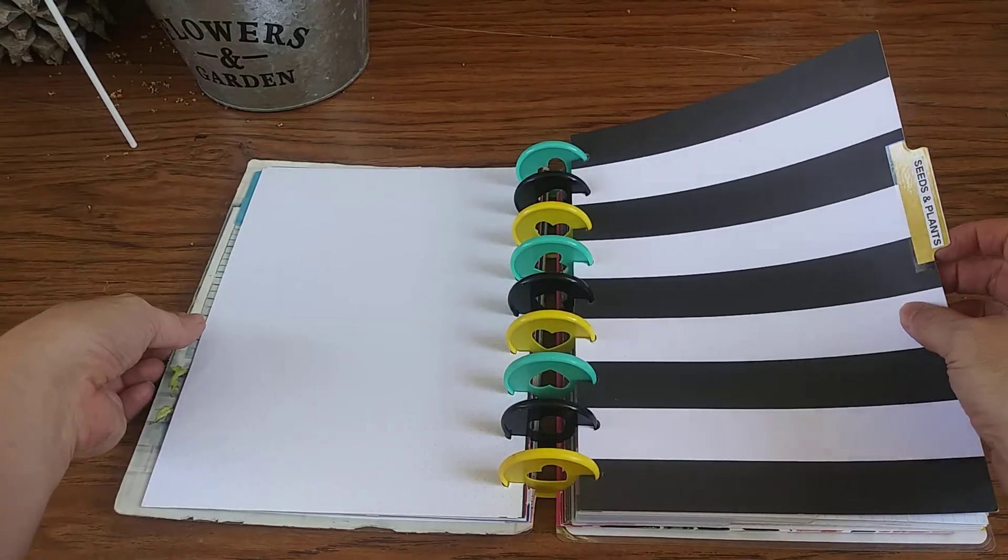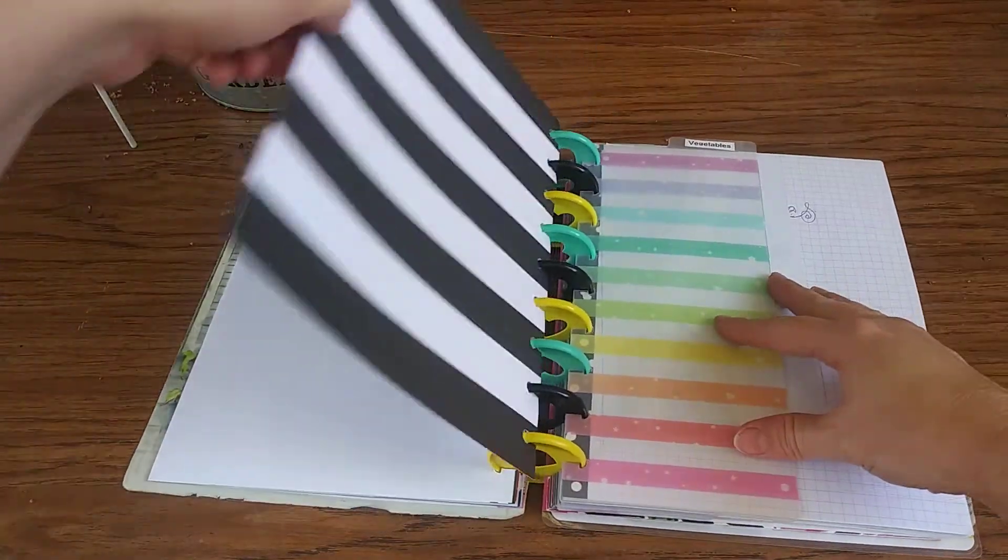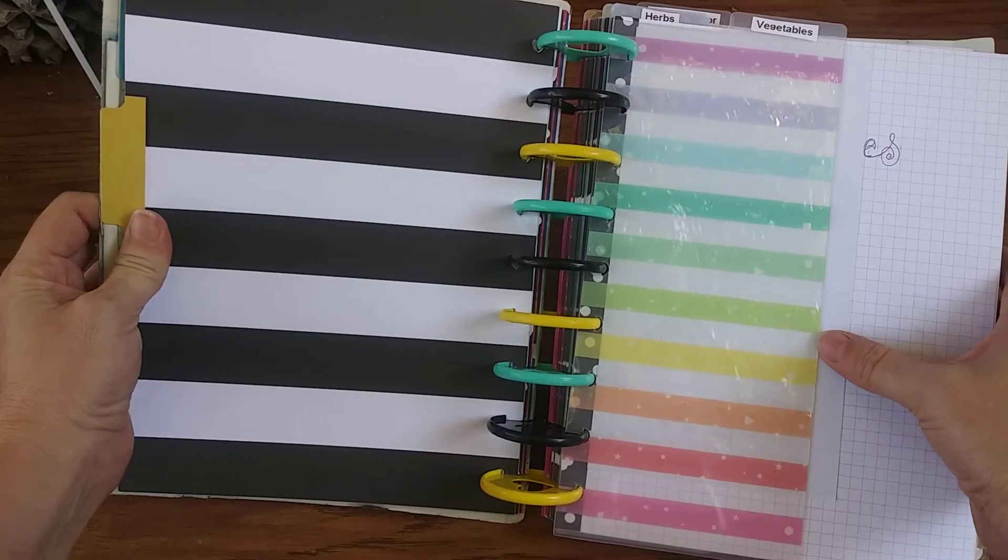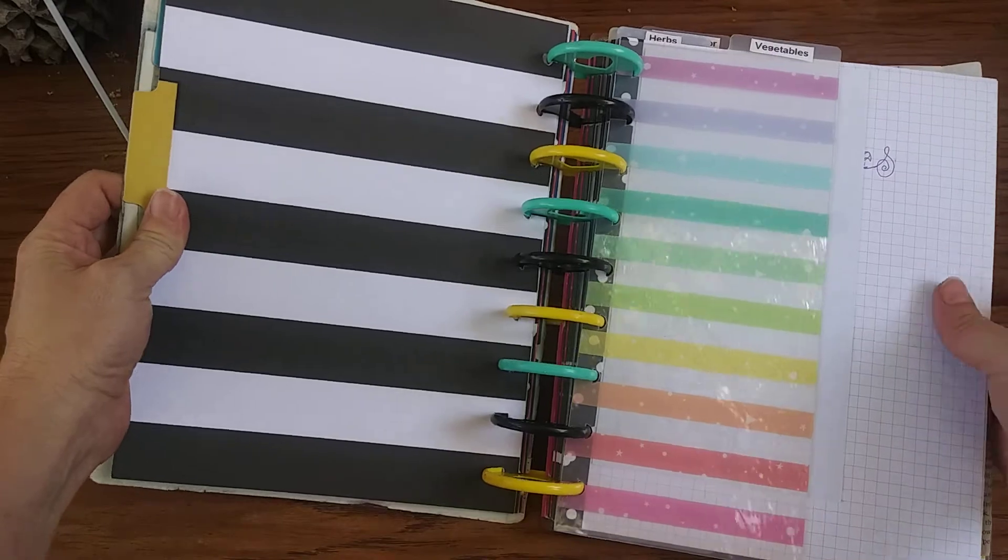So this is my seeds and plant section. And I have it starting off with vegetables since that has been my main goal this year to have a vegetable garden.